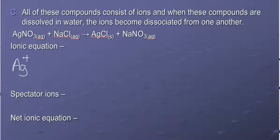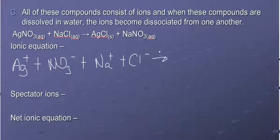So AgNO3 is aqueous, it breaks apart into Ag plus and NO3 minus. Every compound has one positive ion and one negative ion. NaCl is aqueous, we're going to split it apart into its ions, Na plus and Cl minus on the product side.